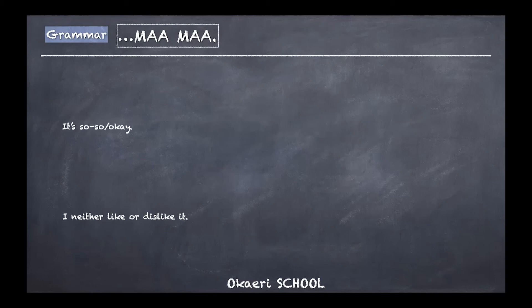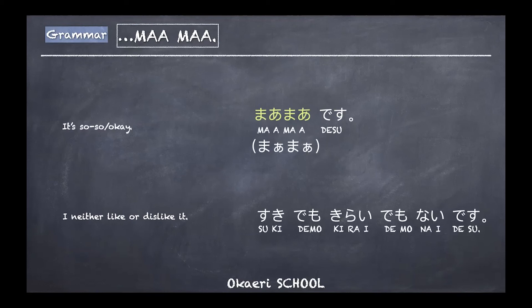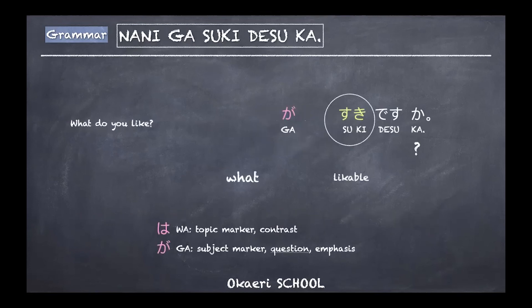When you neither like nor dislike something — it's so-so — you can say maamaa desu. It can be written with a long vowel. If you want to sound more fluent, you can say suki demo kirai demo nai desu, which literally means 'neither like nor dislike.' If you can't remember that, just use maamaa desu.